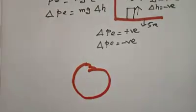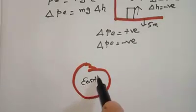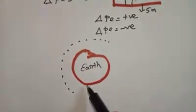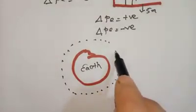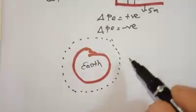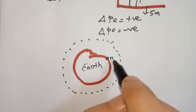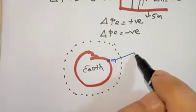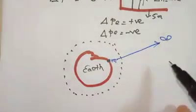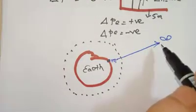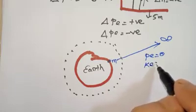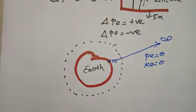This is our Earth, and there is a surrounding gravitational field — the surrounding gravitational field of the Earth. When we are trying to place a mass far away from the Earth, say a mass m, long up to infinity — somewhere in space far away — when an object is at infinity, the potential energy is zero and so is the kinetic energy. Both potential and kinetic energy are zero at infinity.